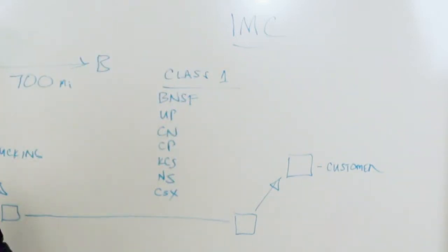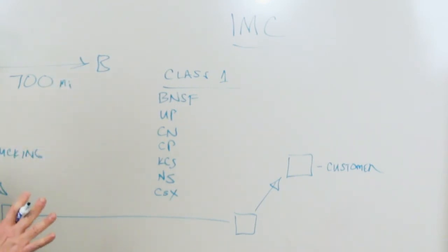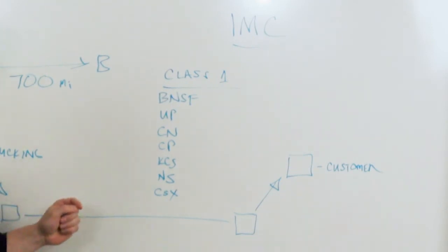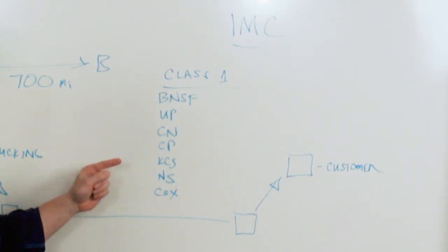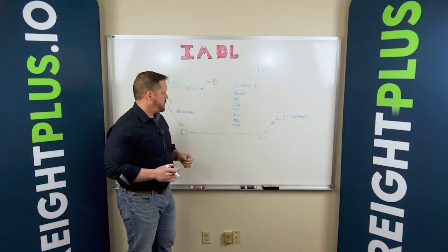The Burlington Northern Santa Fe, the Union Pacific, these are the two biggest rail providers in the western portion of the United States. The Canadian National, the Canadian Pacific, the Kansas City Southern, the Norfolk Southern, and the CSX. And the Norfolk Southern and CSX are the two biggest rail providers on the eastern portion of the United States. From here,